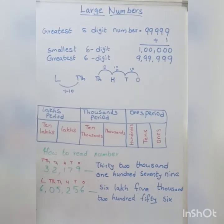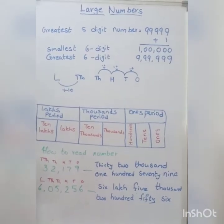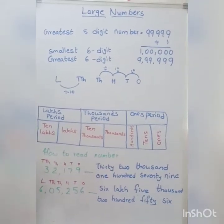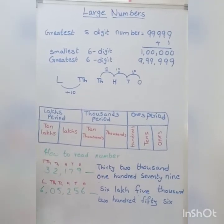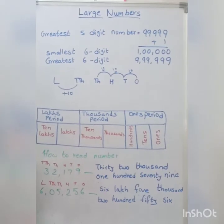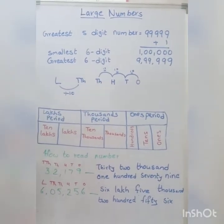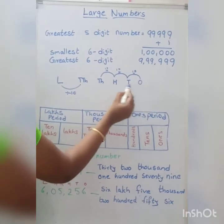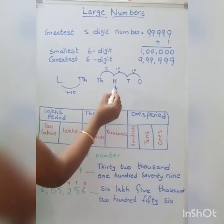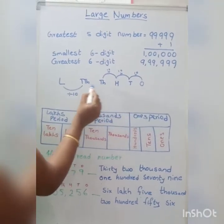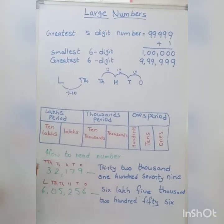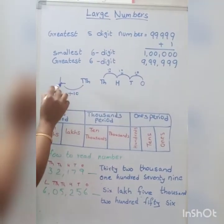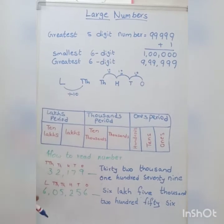The greatest 6-digit number is 9,99,999. The place values we have learnt are: 1s, 10s, 100s, 1,000s, 10,000s, and the new place is lakhs.